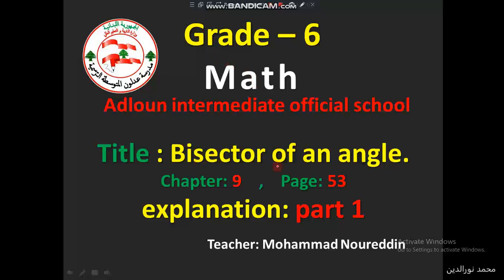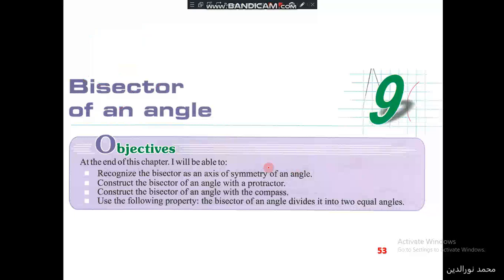Grade 6: Bisector of an angle. This is chapter 9, page 53. At the end of this chapter, I will be able to recognize the bisector as an axis of symmetry of an angle, and construct the bisector of an angle using the protractor — and also using the compass.